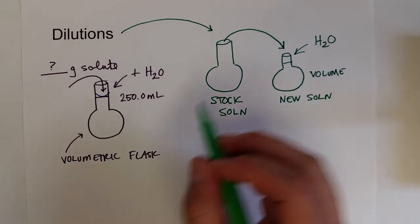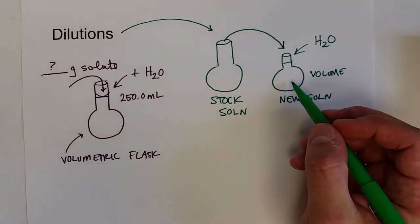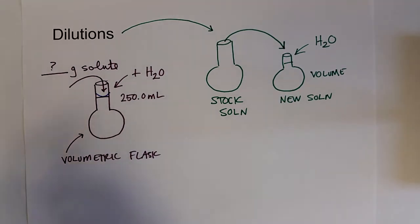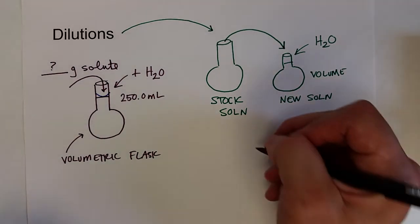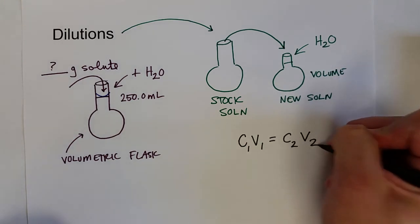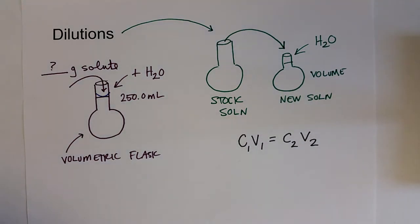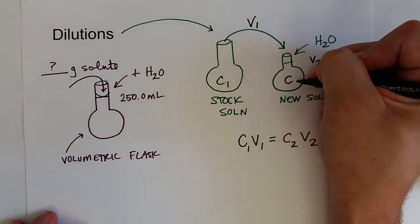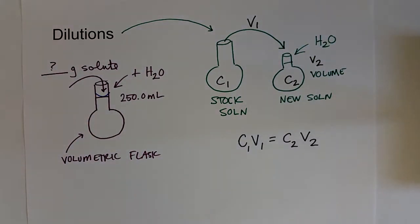One of the things you would need to know is how to calculate the concentration of your new solution or if you know what concentration you need how much of the stock solution do you need to use. There's a very simple equation for calculating these values: C1 V1 equals C2 V2, where C1 is the concentration of your stock solution, V1 is the volume of the stock solution used to make your new solution, V2 is your new total volume, and C2 is the concentration of your new diluted solution.